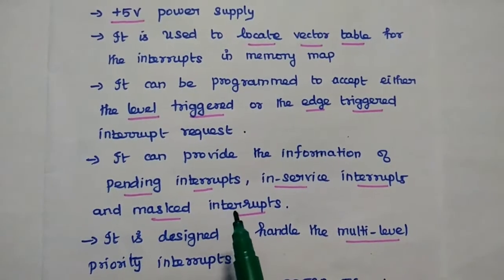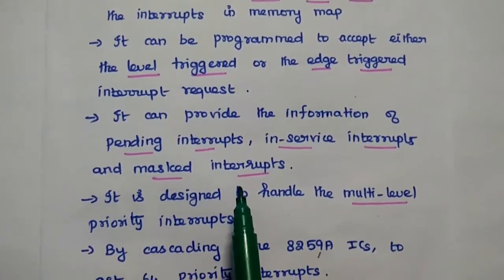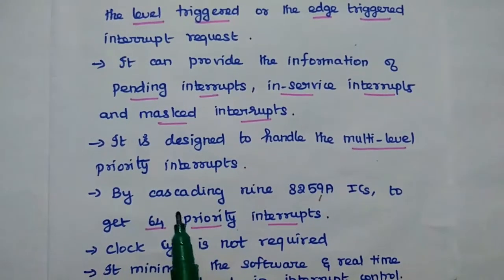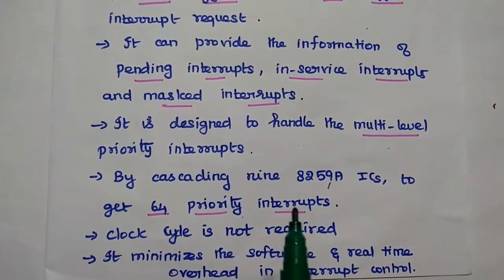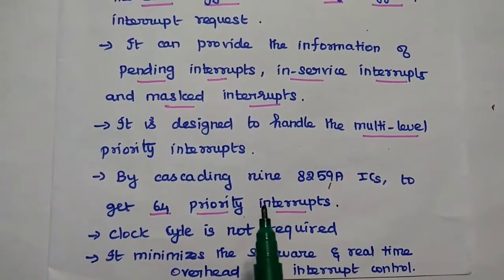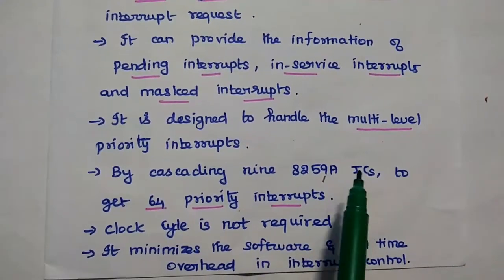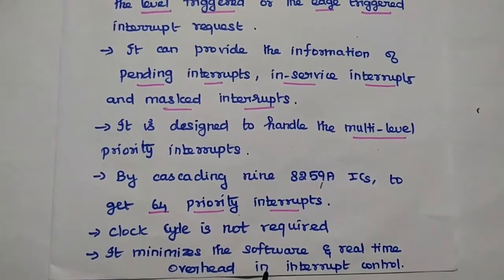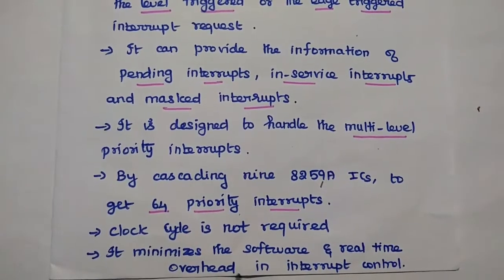All the interrupt-related information can be controlled by this Programmable Interrupt Controller 8259. It is designed to handle multi-level priority interrupts. By cascading 8259A ICs, we can increase the priority interrupts up to 64. A single IC can control 8 priority interrupts, and we can increase the count by cascading the 8259 ICs. Also, the clock cycle is not required for its operation. It minimizes the software and real-time overhead in interrupt control, and since it is programmable, we can easily control the interrupt.